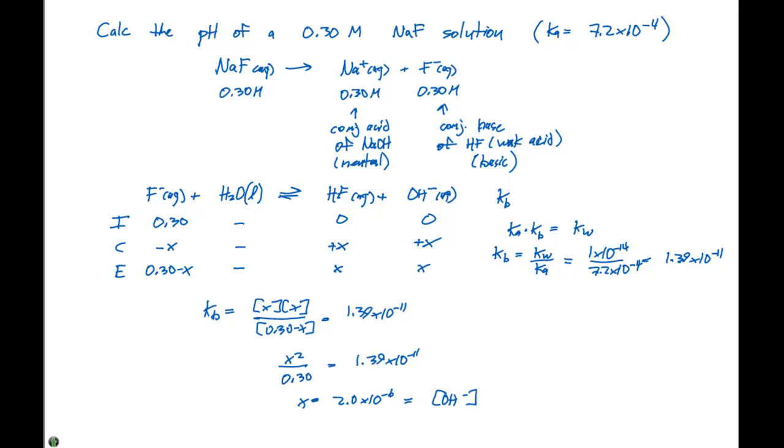If we wanted to calculate what the pH was, we can first calculate the pOH, which is going to be equal to the negative log of 2.0 times 10 to the -6. The pOH is going to equal 5.69.